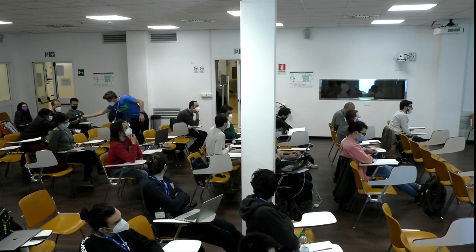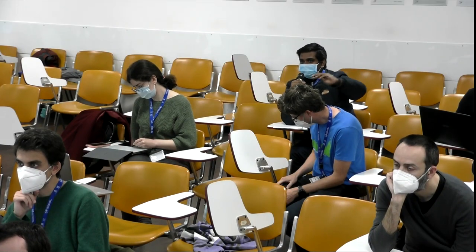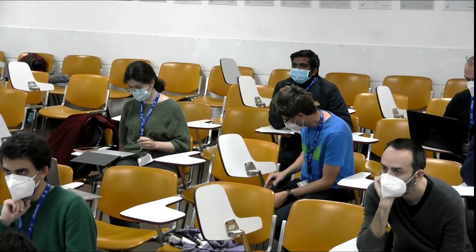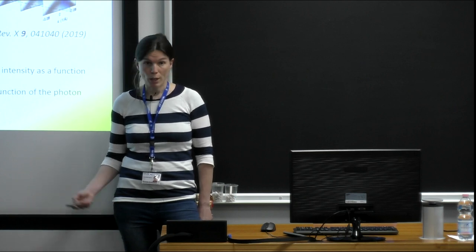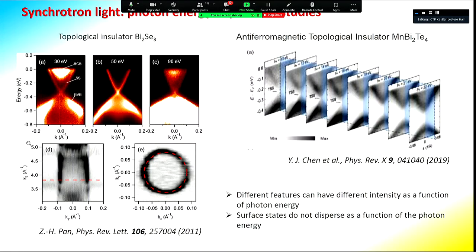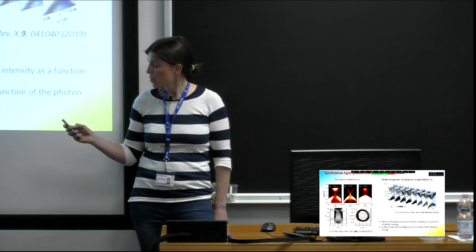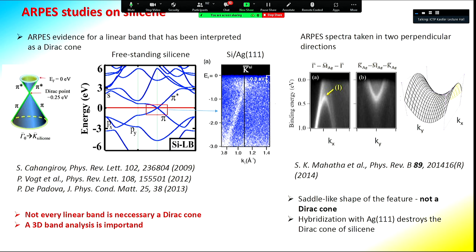Question: how do you separate the band structures of the material of interest and the substrate? One can distinguish surface-related features from bulk-related features by taking the photon energy dependence — with a synchrotron, surface-related features remain fixed in position with changing photon energy, while bulk-derived features normally shift. However, this is not always straightforward: in the case of silicene, the feature reported as a Dirac cone was not changing with photon energy, but because it was a particular silver state with a high density of states that stays fixed.